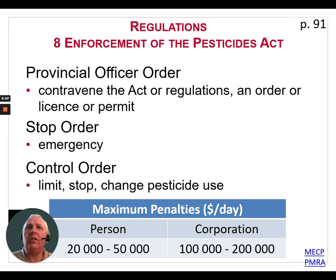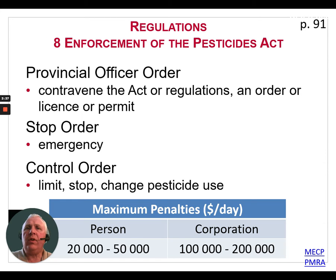Looking at the tickets they can issue: they can issue a provincial officer order, which is for contraventions of the act, regulations, an order, or a license or permit. They can also issue a stop order — in case of an emergency, to tell people to stop whatever they're doing. They can also issue a control order that can limit, stop, or change the use of a pesticide. The fines are substantial: for a person it can range from $20,000 to $50,000 per day, and for a corporation from $100,000 to $200,000 per day.